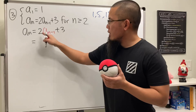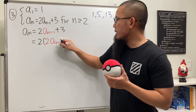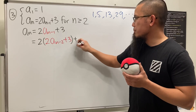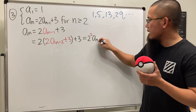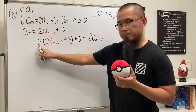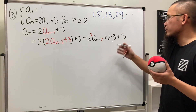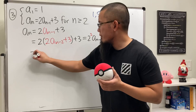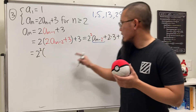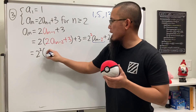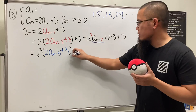We start with aₙ = 2·aₙ₋₁ + 3. Substitute n minus one in for aₙ₋₁: we get 2·(2·aₙ₋₂ + 3) + 3. Distributing the 2 gives 2²·aₙ₋₂ + 2·3 + 3. Continuing one more step, substitute n minus two to get 2·aₙ₋₃ + 3, then multiplying out gives 2³·aₙ₋₃ plus the accumulated threes.